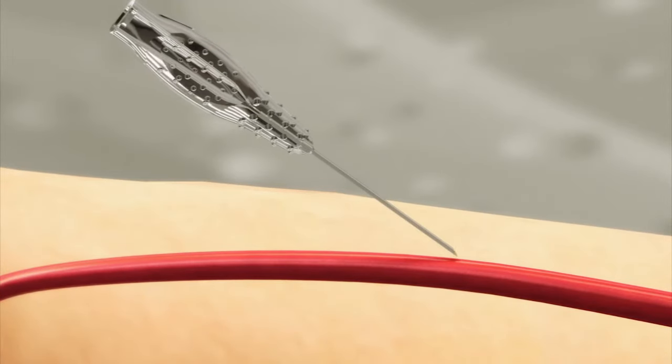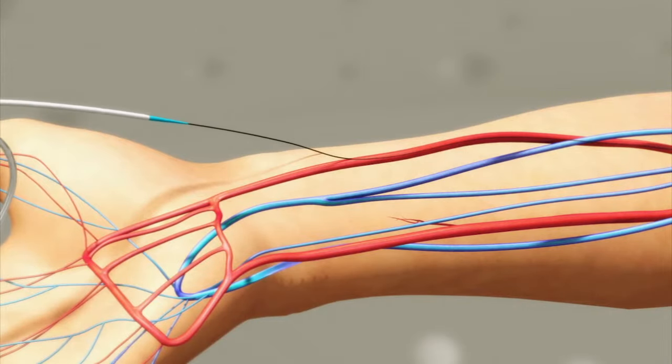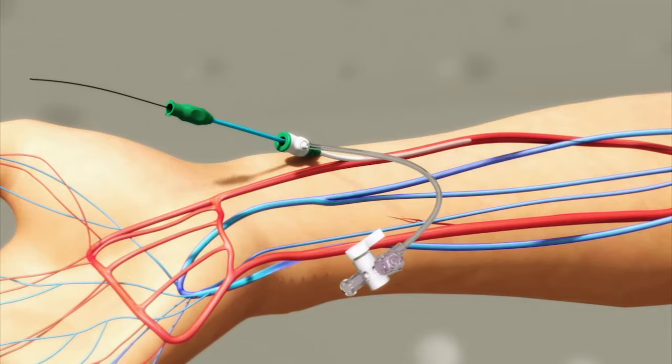Then a tiny puncture is made, and a short tube called a sheath is inserted gently into your artery.